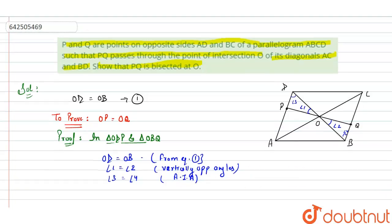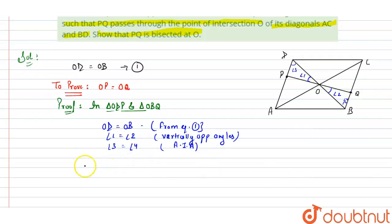So, by AAS rule, triangle ODP is congruent to triangle OBQ.